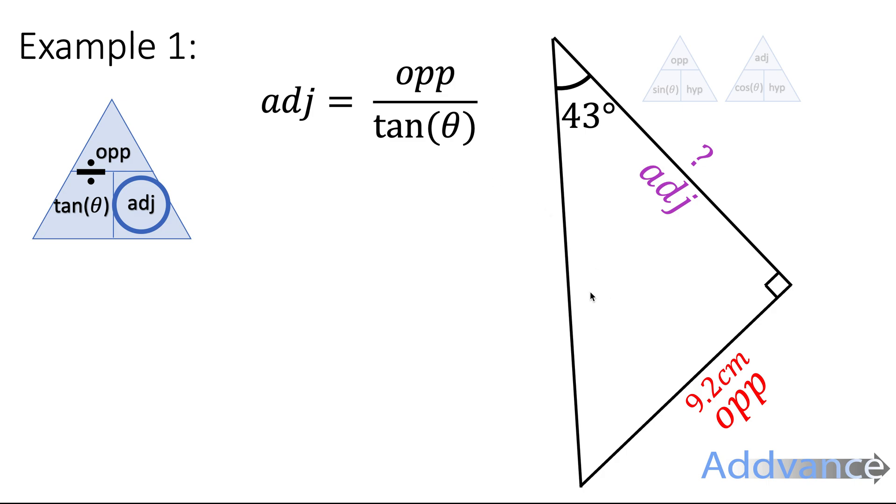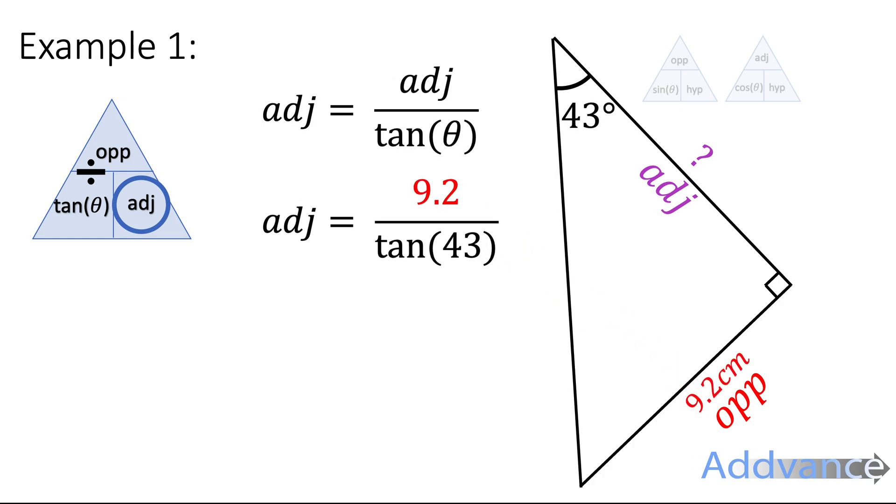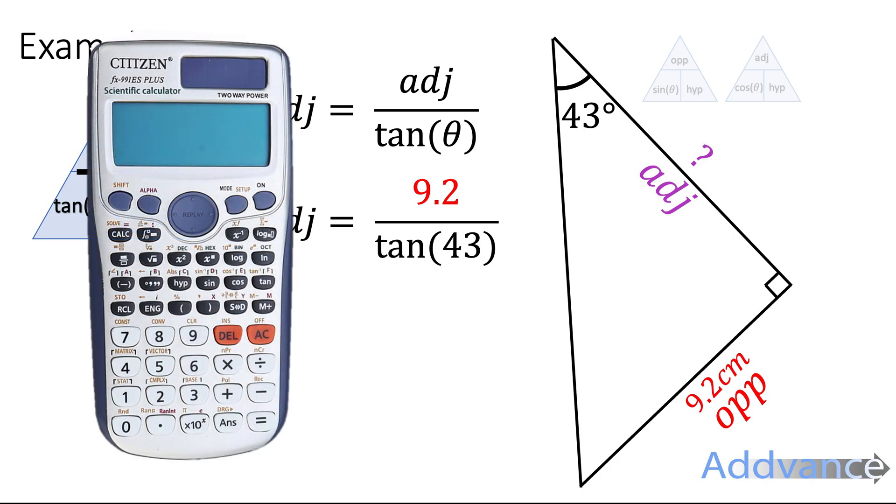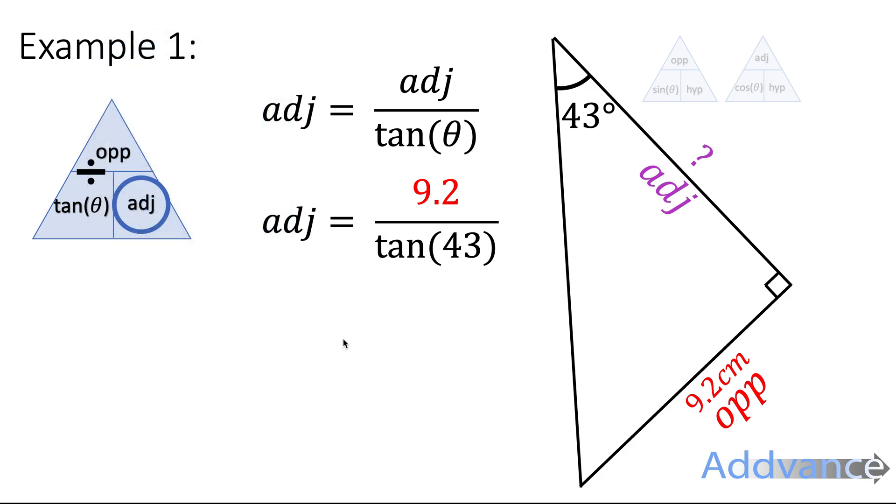So we put the numbers in. Opp is 9.2, the angle is 43, like this, and then we type that into our calculator with the fraction button and the tan button. And you should get 9.865792, which we round to 9.87 cm. And that is the final answer, that is the length of this missing side.